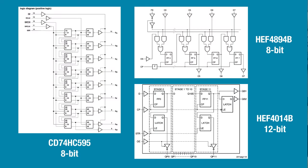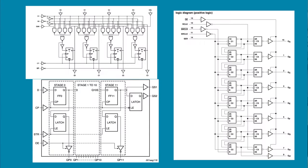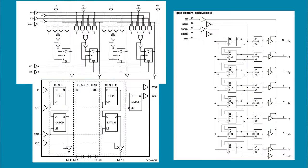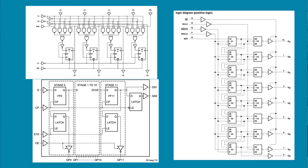In a shift register, the flip-flops and latches make up stages. Each can hold one bit of data. A bit is either a 1 or a 0 — 1 being a high voltage signal and 0 being a low voltage signal. The number of bits a shift register can process, be it 4-bit, 8-bit, or 12-bit, corresponds with the number of latches or stages it has.